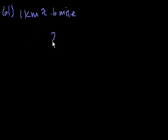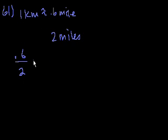So we want to know 2 miles. We could set up a ratio. We could say 0.6 is to 2, 0.6 miles are to 2 miles, as 1 kilometer is to x kilometers.